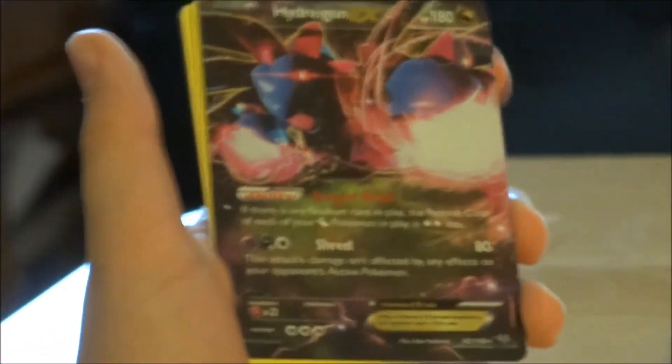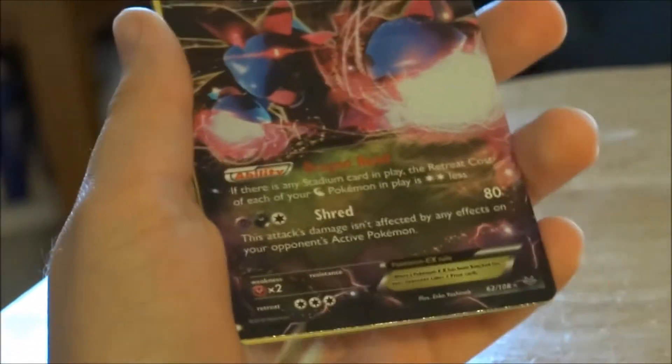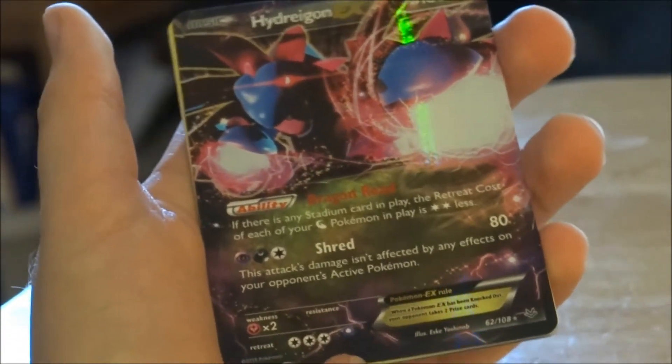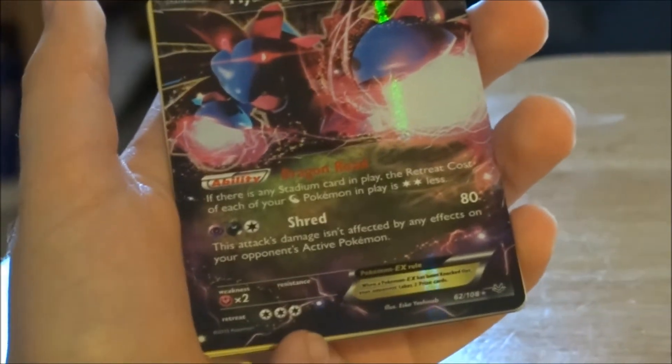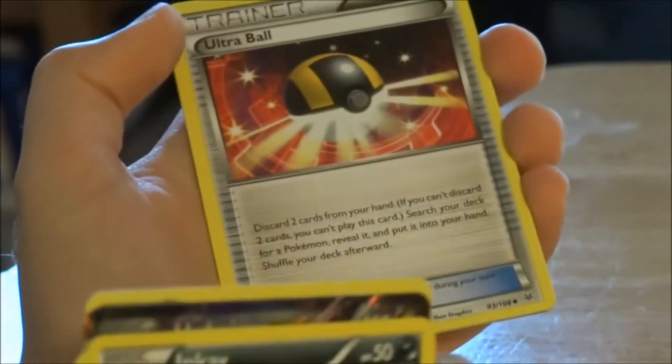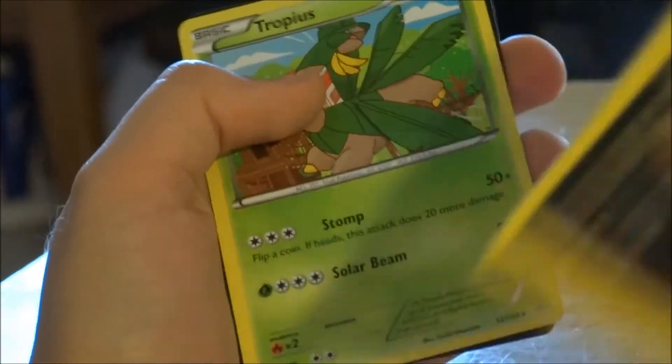Hydreigon EX! Yes, we have our first Ultra Rare in this box. It is a Hydreigon EX. Wow, awesome, that looks cool. Togetic, Ultra Ball, and Tropius.